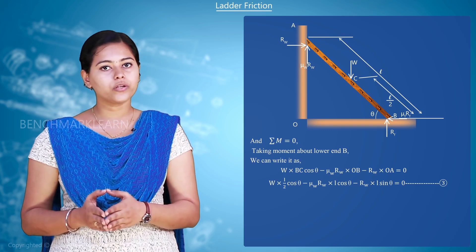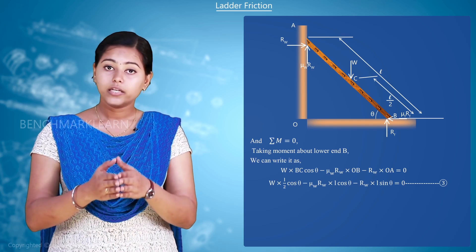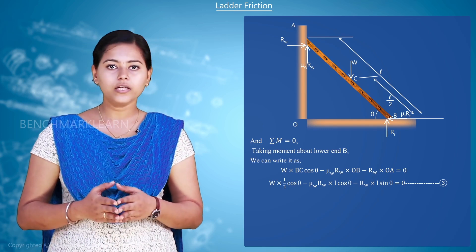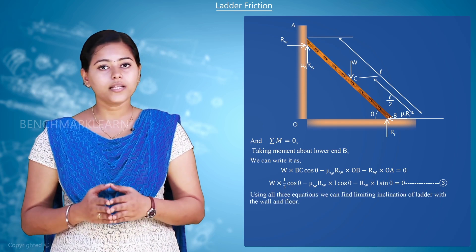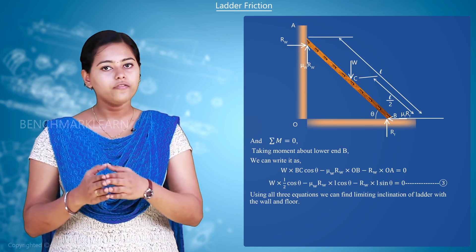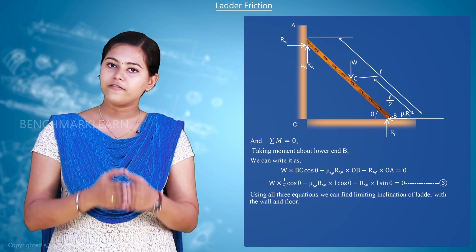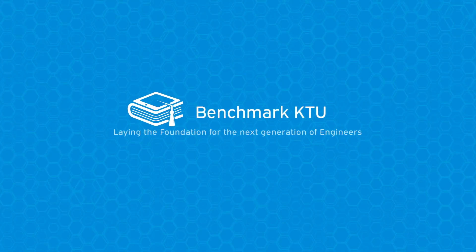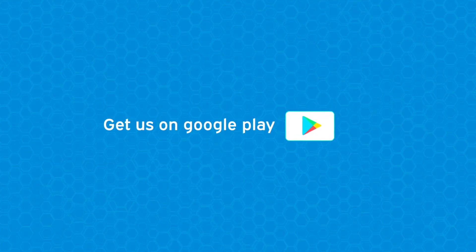This will be the third equation. Using all three equations, we can find limiting inclination of the ladder with the wall and floor. Thank you.